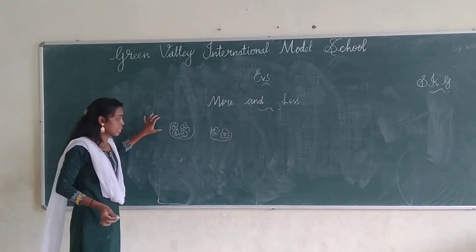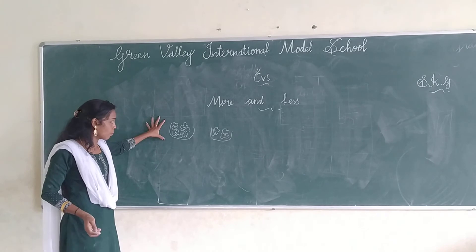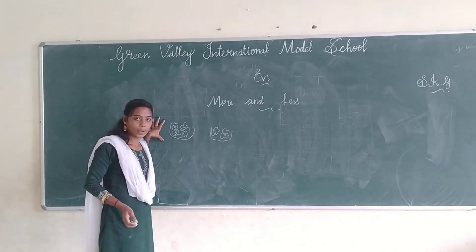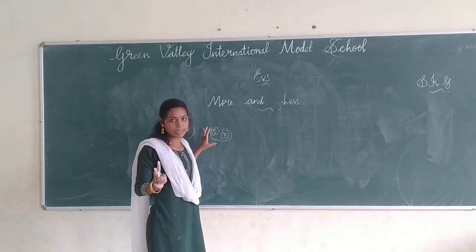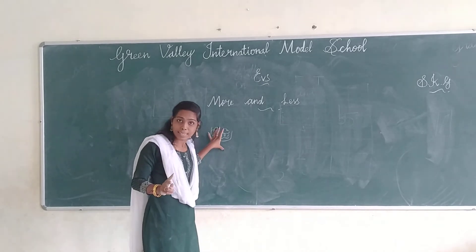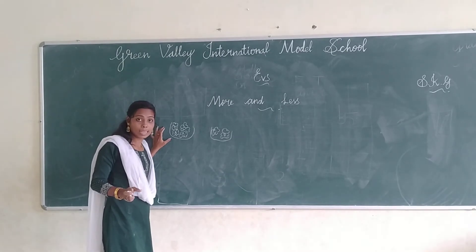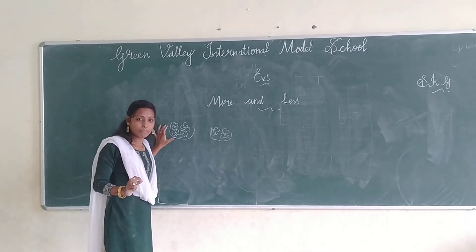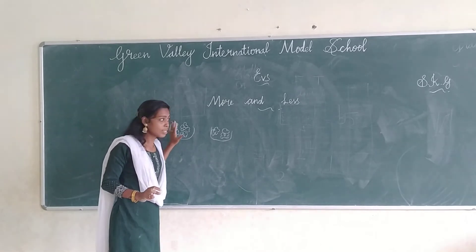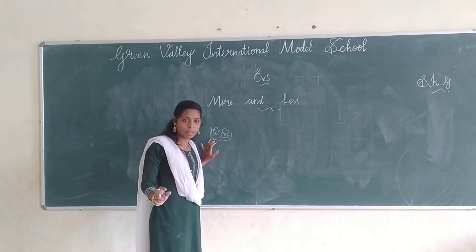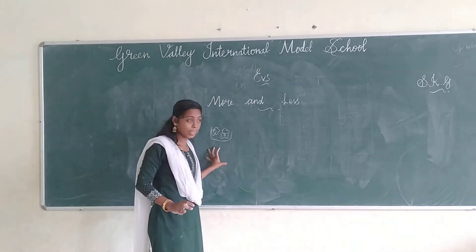So students, this is the flower basket. So here in this flower basket there are more flowers, right? And here there are less — only two flowers are in this basket. So this is less. In this basket there are more flowers, so this is called more. And this one has very few flowers, so this is less.